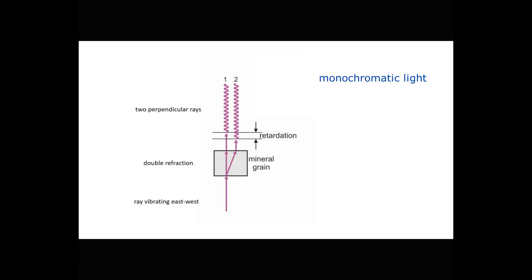Consider a beam of violet-colored light. After double refraction, there become two rays vibrating perpendicularly to each other. These rays may or may not be in phase, but they cannot interfere because they are not following the same path and because they're vibrating in different directions.